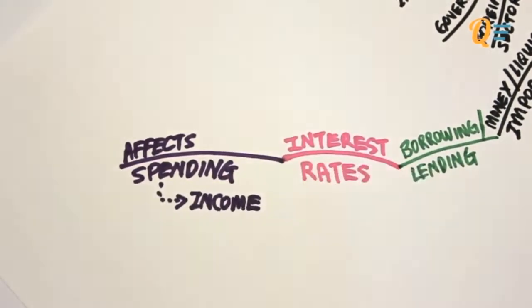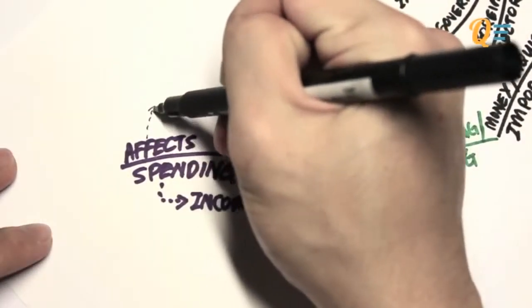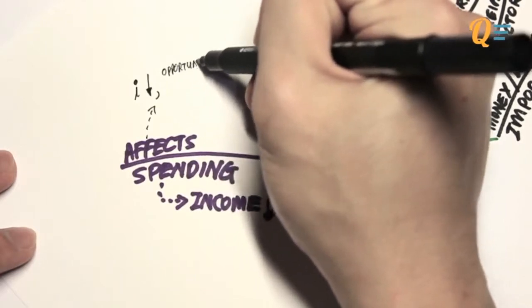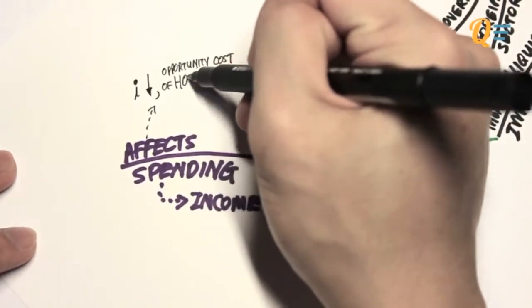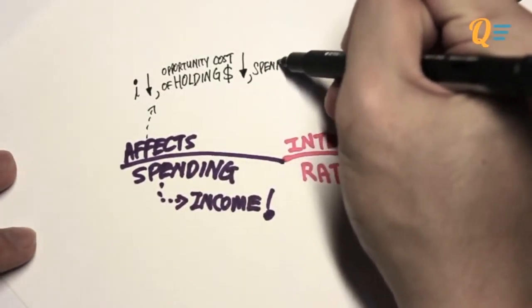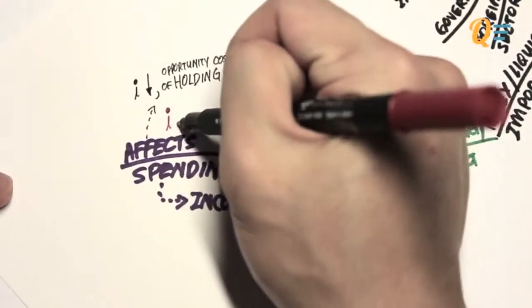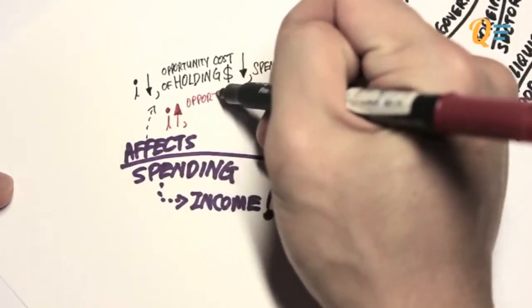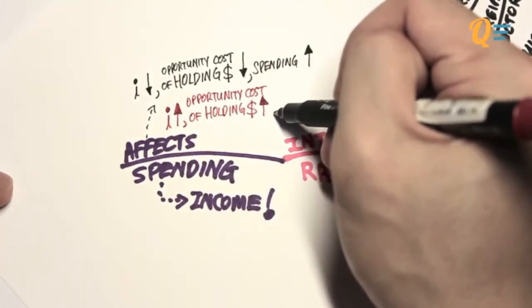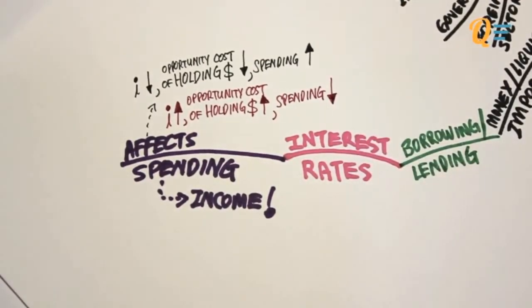Spending actually translates to income. If interest rates are relatively low, what this means is that the opportunity cost of holding money in your own pocket instead of putting it in a bank is low, because the amount of interest you could have earned from the bank is low. So spending is going to increase. If interest rates are higher, the opportunity cost of holding money in your pocket increases, so you're going to put your money in the bank, and with less money in your pocket, you're going to spend less.